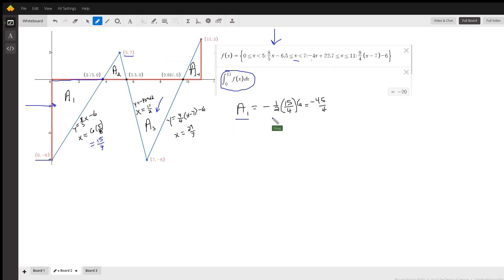Here's how you find the area of region 1, or triangle 1. 1 half, the base, which is 15 fourths, times the height, which is 6. And I put a negative sign in front because I can see that that triangle is under the x-axis. And similarly, you do the same type of things for a 2, a 3, and a sub 4.